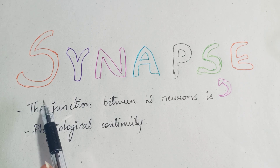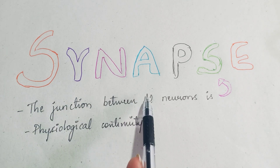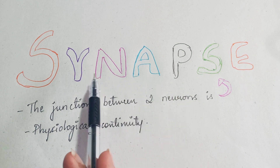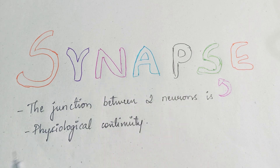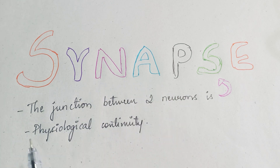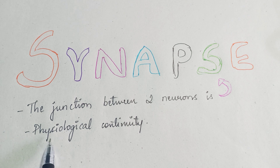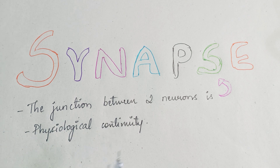Synapse — the junction between two neurons is called a synapse. This synapse is not an anatomical continuation but it is more of a physiological continuity.